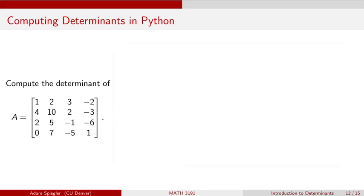And so let's use this SymPy built-in determinant calculator in Python to calculate the determinant of this four by four matrix that we had earlier. So now the first column is 1, 4, 2, 0. Second column is 2, 10, 5, 7. The third column is 3, 2, minus 1, minus 5. Column 4 is minus 2, minus 3, minus 6, 1.